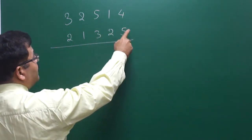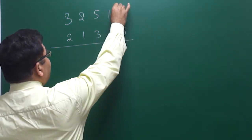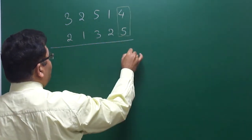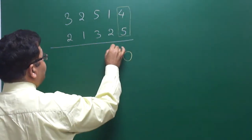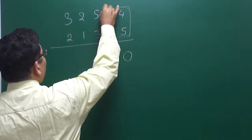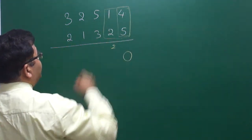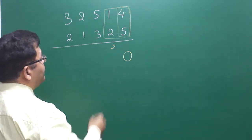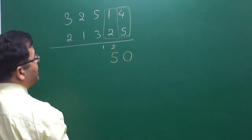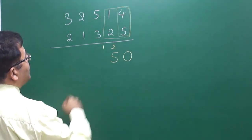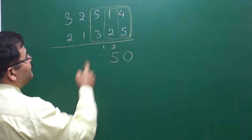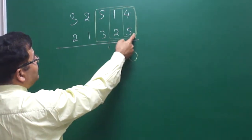Before learning this, let's review the previous step. Taking one pair at a time: 5 × 4 = 20, so write 0, carry 2. Now taking two at a time: 8 + 5 = 13, plus 2 carry = 15, so write 5, carry 1.